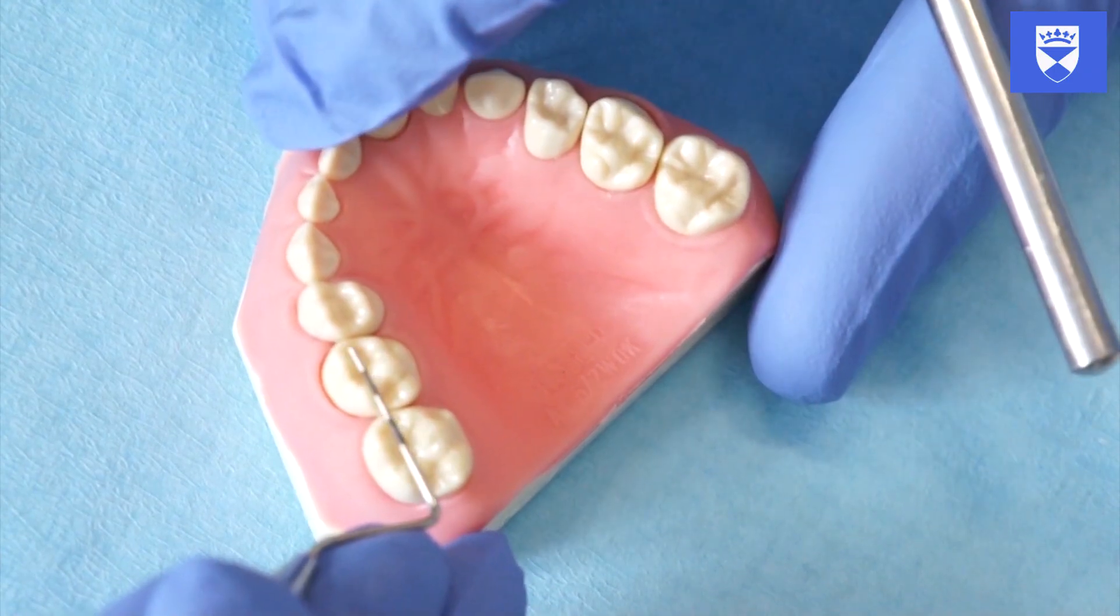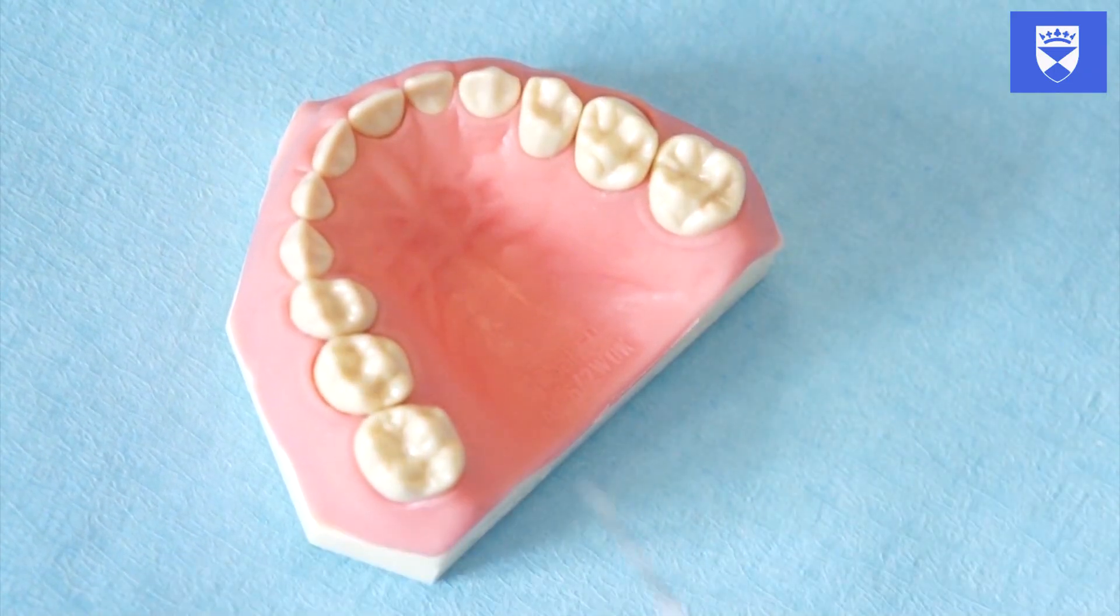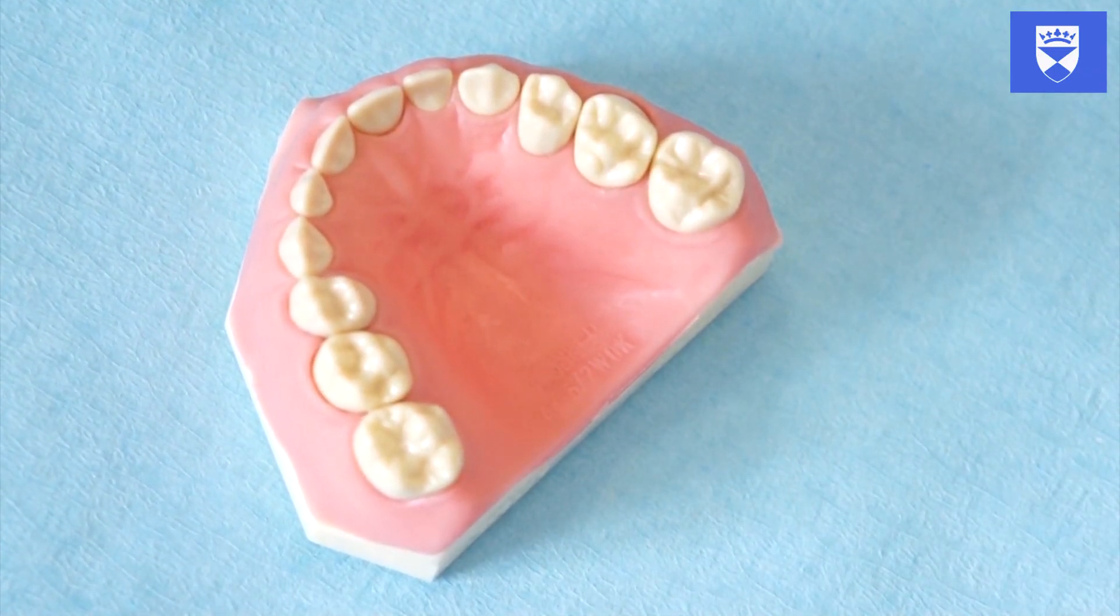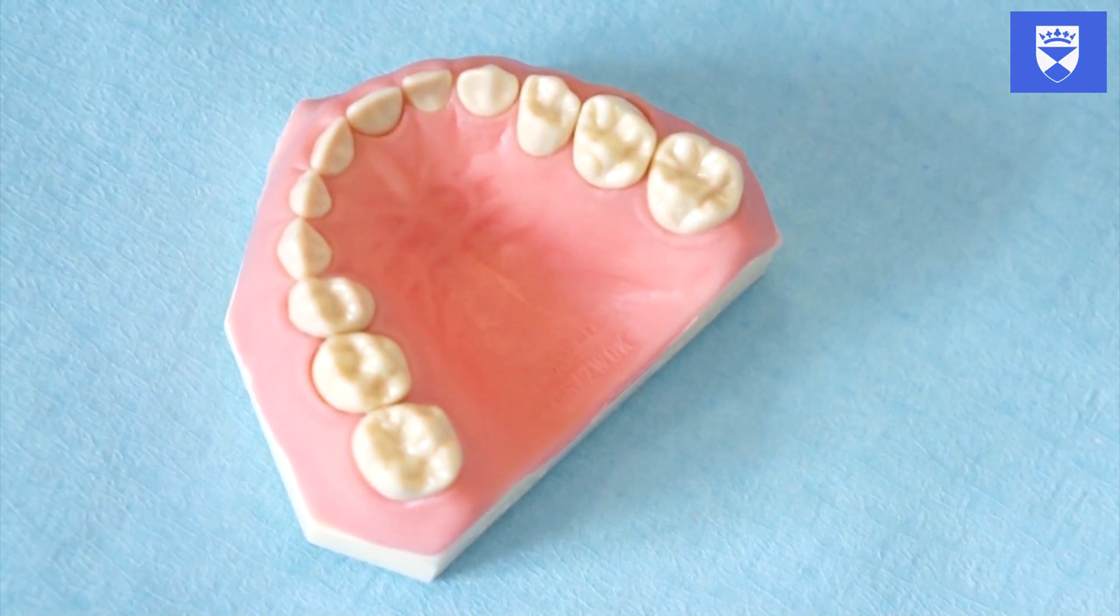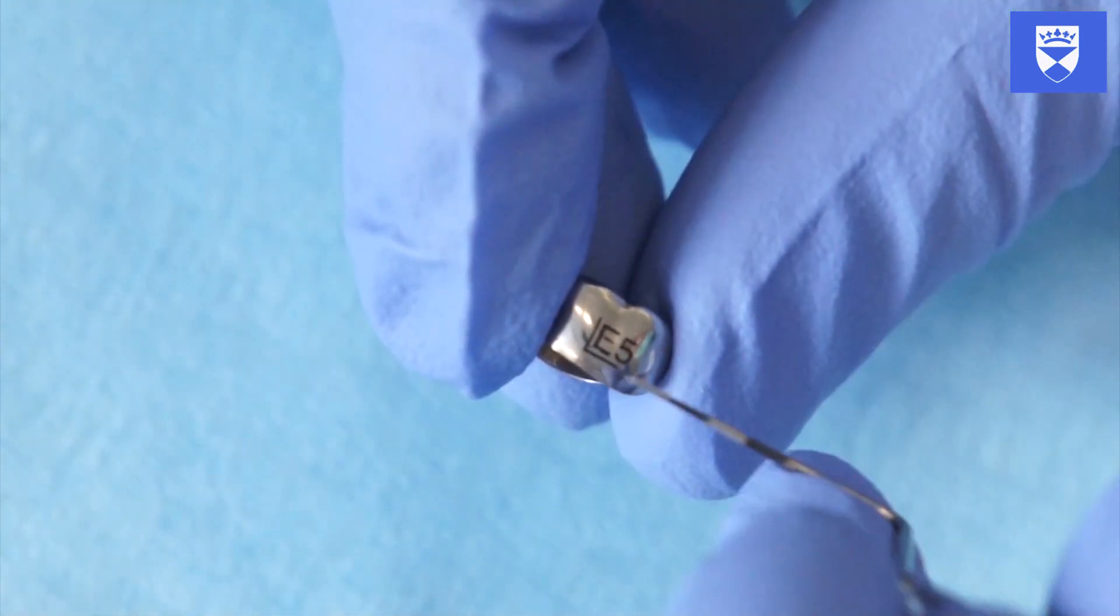Also note any occlusal clearance and measure the distance between adjacent tooth contacts. Use these measurements to aid in the selection of the correct sized preformed metal crown.